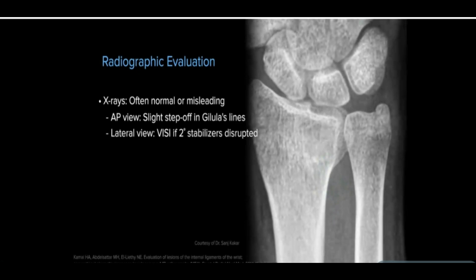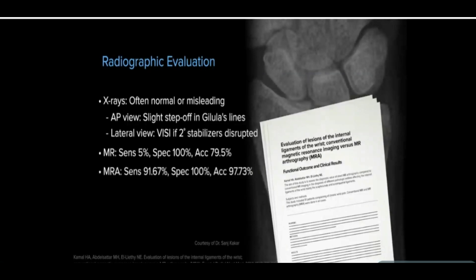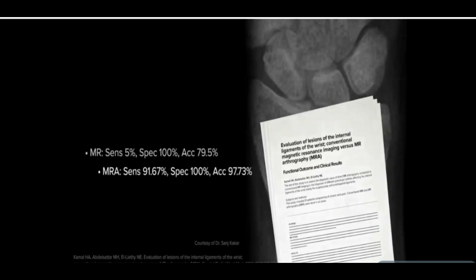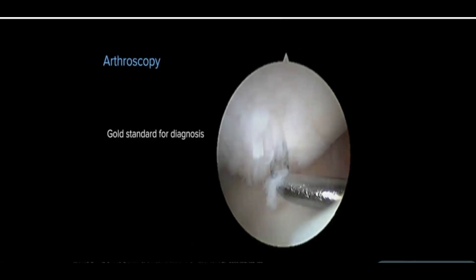In a study performed by Kamal, Abdelsattar, and El-Lethy in 2014, conventional MRI showed a sensitivity, specificity, and accuracy of 5%, 100%, and 79.5%, respectively, compared to 91.6%, 100%, and 97.7% with MR arthrogram for lunotriquetral ligament tears. Wrist arthroscopy remains the gold standard for diagnosis.